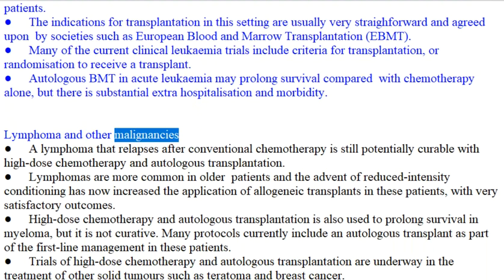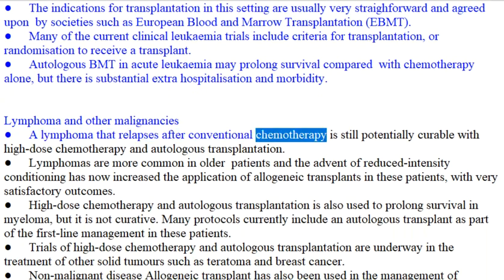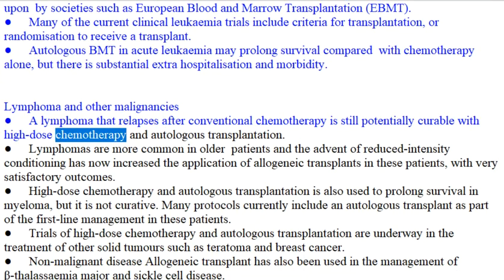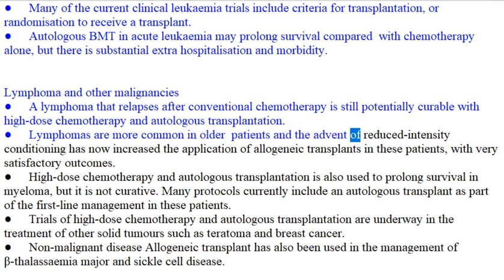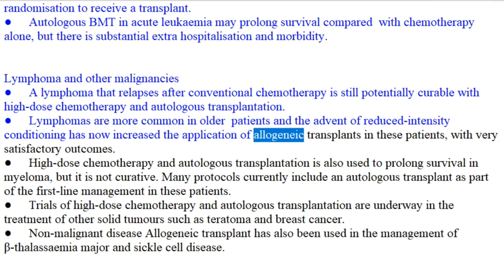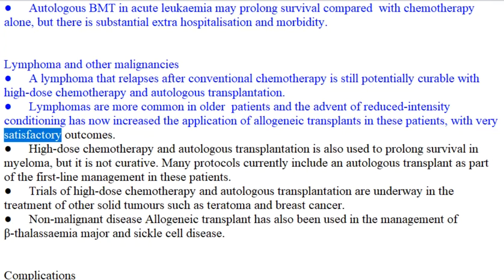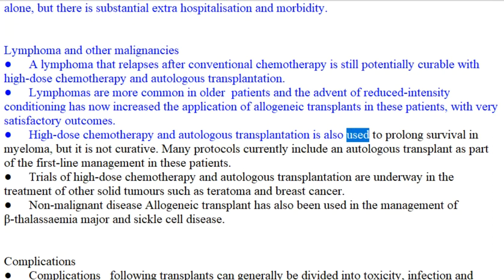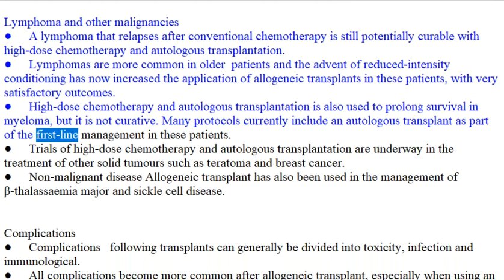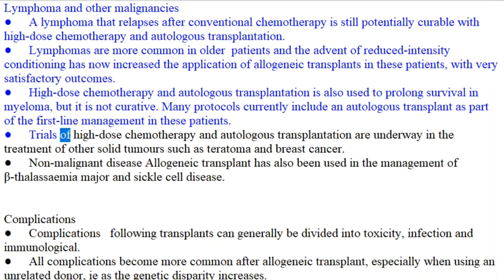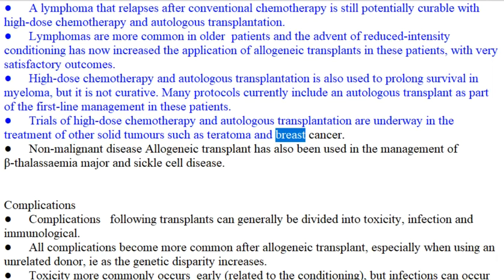Lymphoma and other malignancies: A lymphoma that relapses after conventional chemotherapy is still potentially curable with high-dose chemotherapy and autologous transplantation. The advent of reduced-intensity conditioning has increased the application of allogeneic transplants in older lymphoma patients, with very satisfactory outcomes. High-dose chemotherapy and autologous transplantation is also used to prolong survival in myeloma, but it is not curative. Trials are underway in other solid tumors such as teratoma and breast cancer.